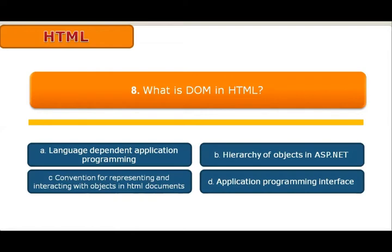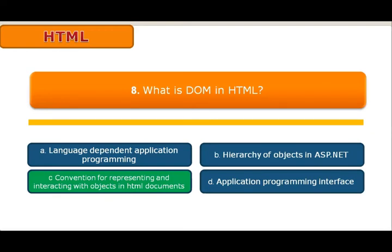Question 8: What is the DOM in HTML? Four options are given: A. Language-dependent application programming, B. Hierarchy of objects in ASP.NET, C. Convention for representing and interacting with objects in an HTML document, D. Application programming interface. The Document Object Model is a cross-platform and language-independent application programming interface that treats an HTML, XHTML or XML document as a tree structure. A document can be viewed as a logical tree with the help of the DOM model.